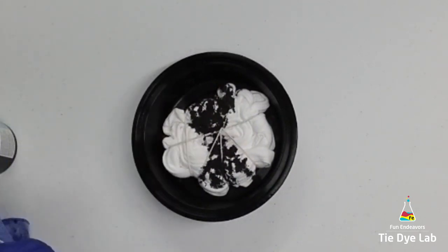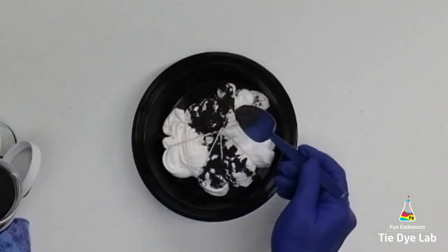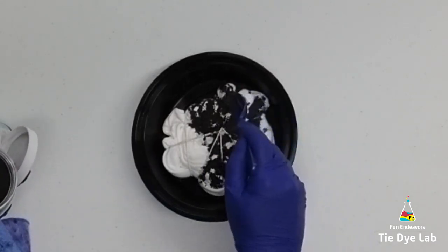Then the second color is Royal Blue from Custom Colors. I'm going to apply that in the other two sections.